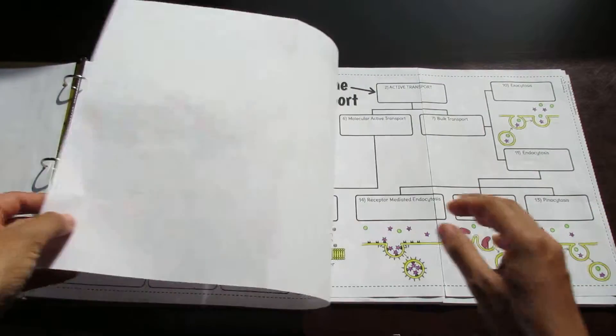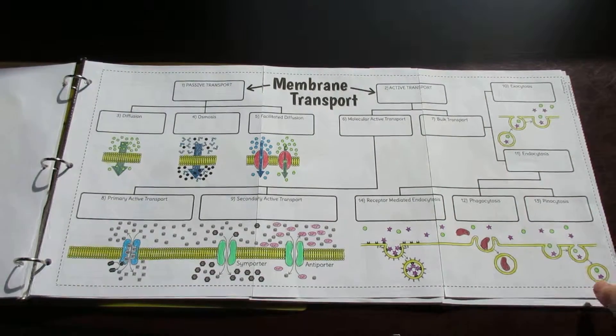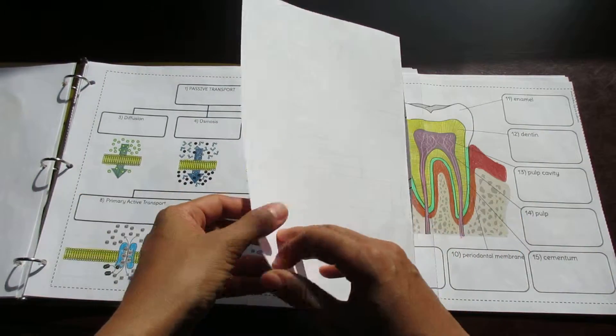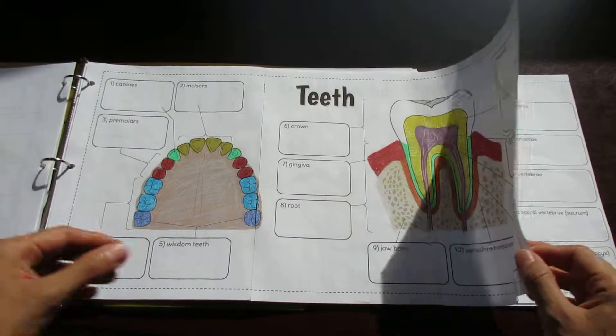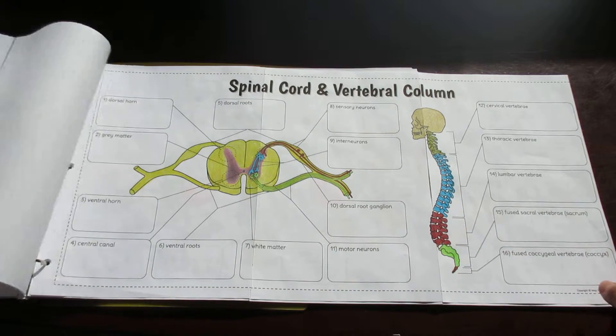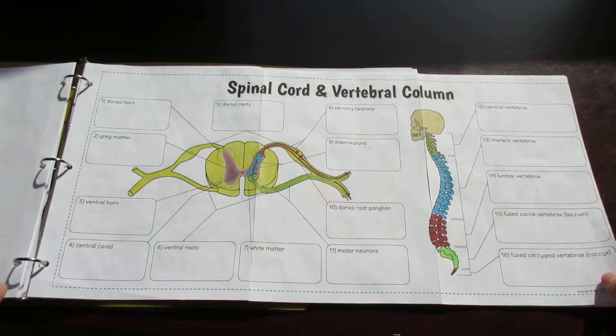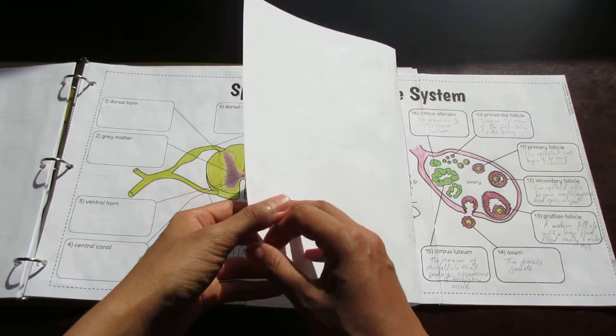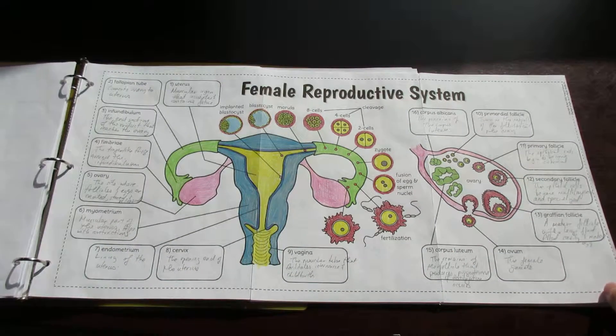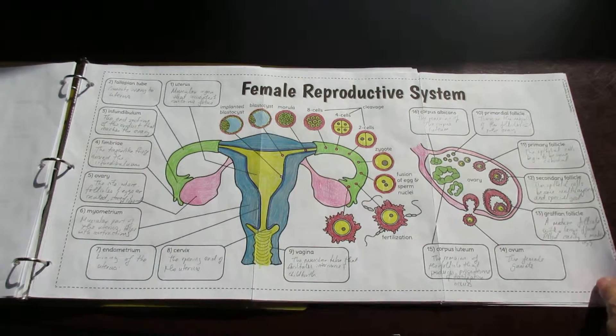cell membrane transport, this is teeth, the spinal cord and the vertebral column, the female reproductive system. I got a bit frisky and filled this one out.